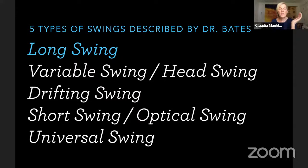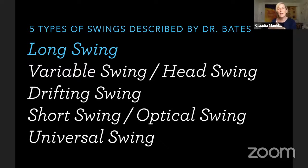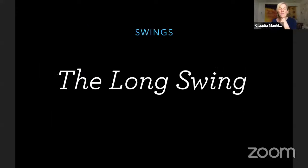There's also something he called the variable swing, which I call the head swing, where you basically do 180 degrees just with the head. Then the drifting swing, the short swing or optical swing, and the universal swing. I'm going to go through all five of these. I have videos for the first two — the long swing and the variable or head swing — but not for the other three, because it's very hard to demonstrate on video versus describing how it works.